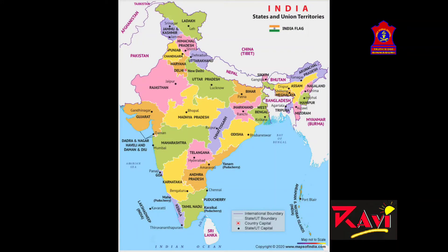India is divided into 28 states and 9 union territories. It has a different landscape and climate in different regions. The capital of India is New Delhi.